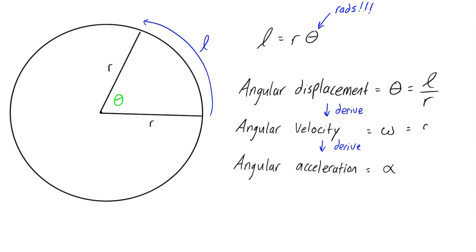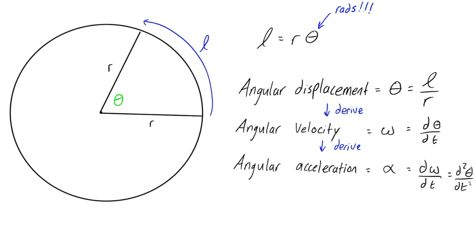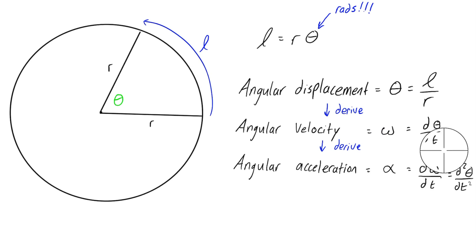We can write these using calculus notation: angular velocity is d-theta over d-t, and angular acceleration is d-omega over d-t, or the second derivative d²theta over dt². You're going to be seeing these quantities a lot in future videos and example problems.